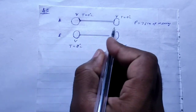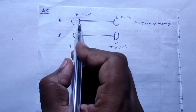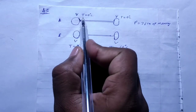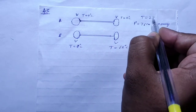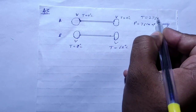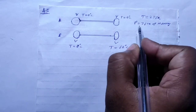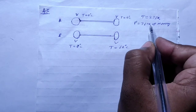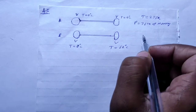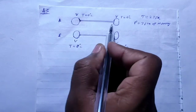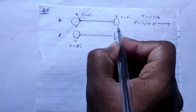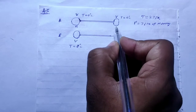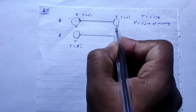The initial situation: temperature is 0 degrees Celsius, that is 273 Kelvin, and pressure is 76 cm of mercury. Both bulbs have the same volume and both have the same number of moles.